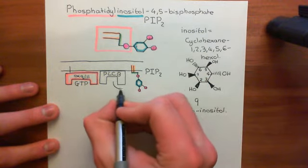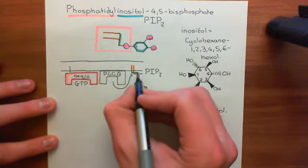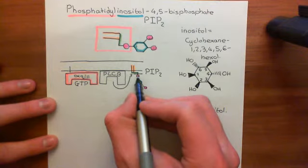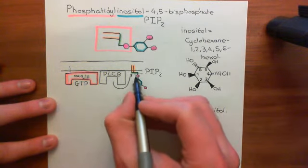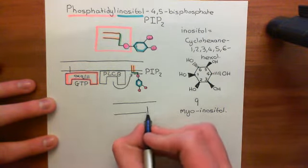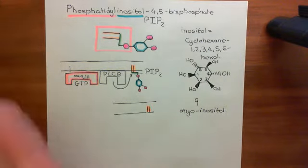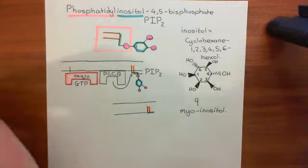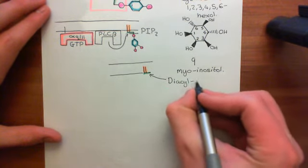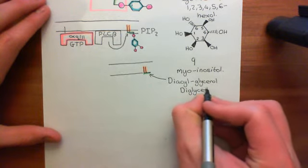The two products of this cleavage are diacylglycerol and inositol-1,4,5-trisphosphate. The diacylglycerol molecule consists of the glycerol backbone linked to the two long-chain carboxylic acids. This molecule is also called a diglyceride, to show the parallels with triglyceride molecules.